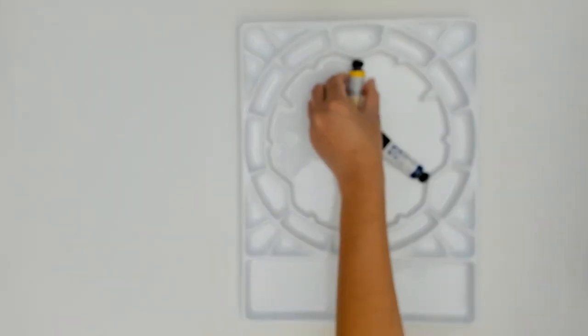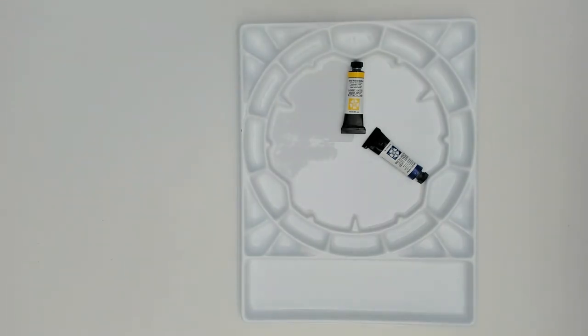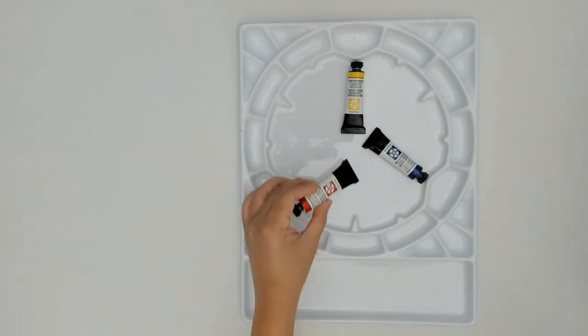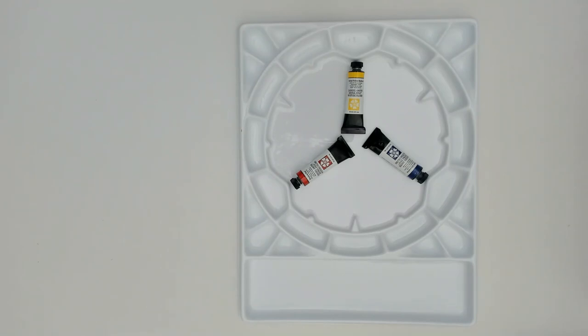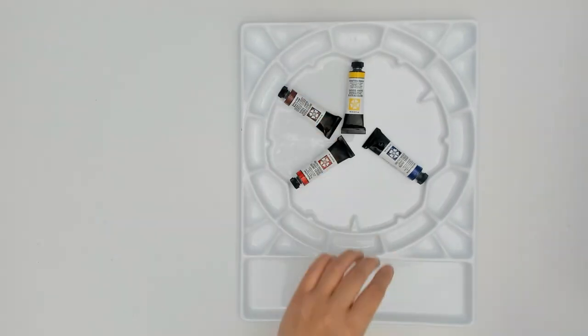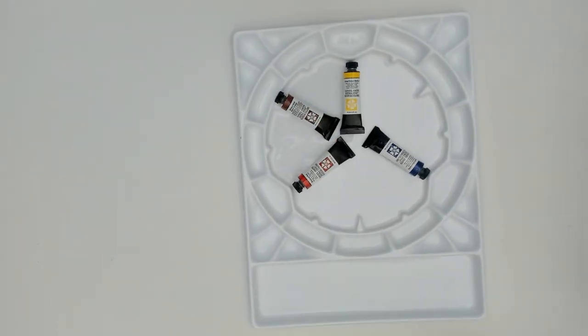So I'm just going to place my tubes where I want them. I'm going to put the yellow at the very top, the red on the left side and the blue on the right side. And in between those colors, I'm going to put my secondary colors. So the burnt orange on the top left,